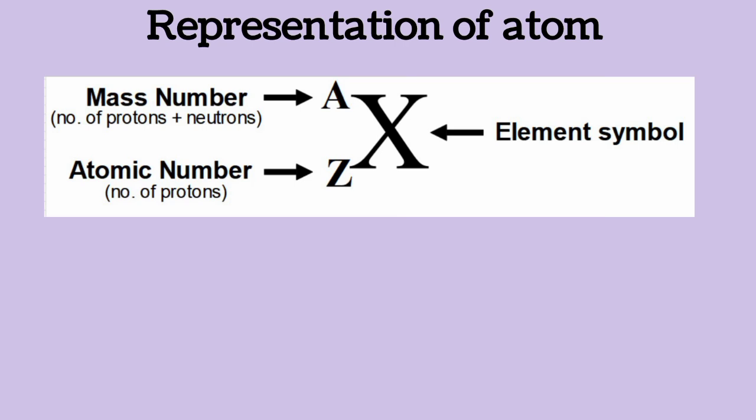The representation of an atom includes a symbol, mass number, and atomic number. The symbol X represents the element. The superscript A represents the mass number, which is the number of protons plus neutrons — so adding the protons and neutrons in the nucleus gives you the mass number. The atomic number is the number of protons, representing the total number of positive charges in the nucleus.